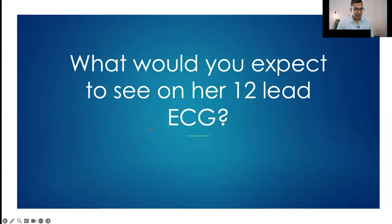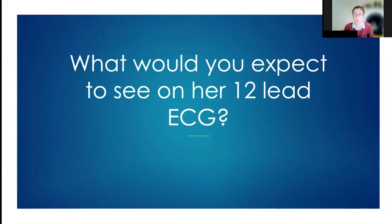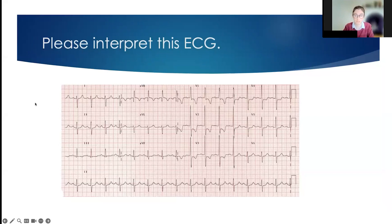What would you expect to see on her 12-lead ECG? She may have a resting tachycardia, a rhythm other than sinus, and signs of right heart strain including the S1Q3T3 pattern, an elevated R wave in V1, and deep T-wave inversion in V1, V2, and V3. She may also be in AF. Interpreting this ECG: there is T-wave inversion and Q waves in lead III, a deep S wave in lead I, deeply inverted T waves in V1-V3, an elevated R wave in V1, and it appears she may meet criteria for P pulmonale, consistent with right atrial dilatation.